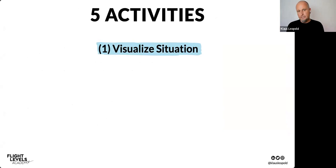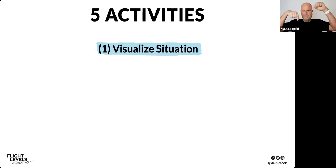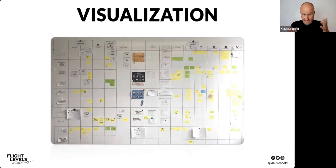If you go through an office building and open any door, you always see the same scene — people staring at screens. That's the kind of visibility we have. If we want to improve what we are doing, it makes sense not to fly blind. We want to make our situation visible, and we can do this by building a board — this is how our current reality looks.